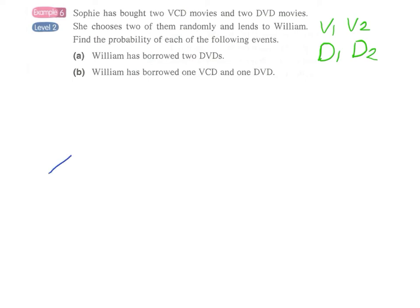Again we start from a single point and since we have a total of four discs, we have four choices: V1, V2, D1 and D2. We start from a single point to draw the tree diagram.